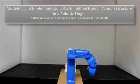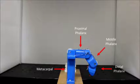This video shows the implementation and function of a robotic finger that utilizes a simplified human tendon structure. The finger has four bones.